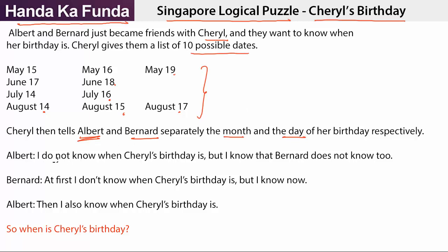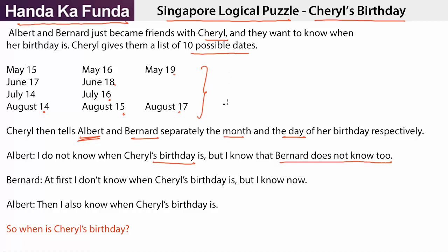Now, Albert says: I do not know when Cheryl's birthday is, because whatever month he has picked, there are multiple options in that. So let's say Cheryl told him June — you don't know whether it's June 17 or June 18, so Albert doesn't know. But I know that Bernard doesn't know too. So how can he be so sure about that? He knows which month it is.